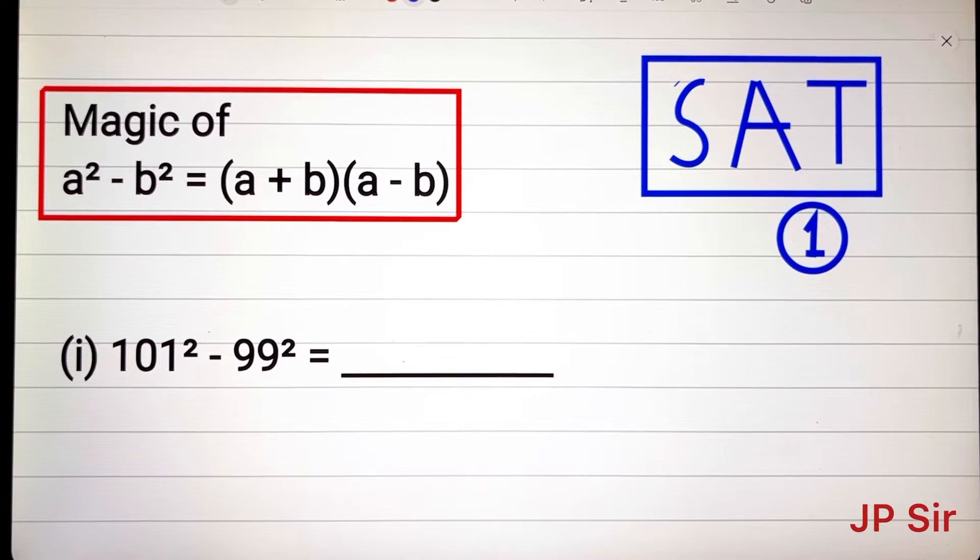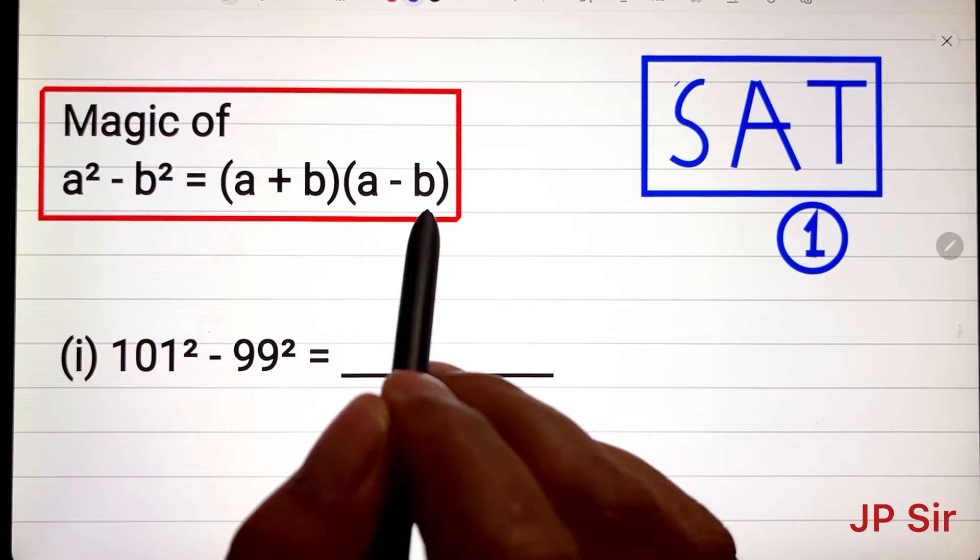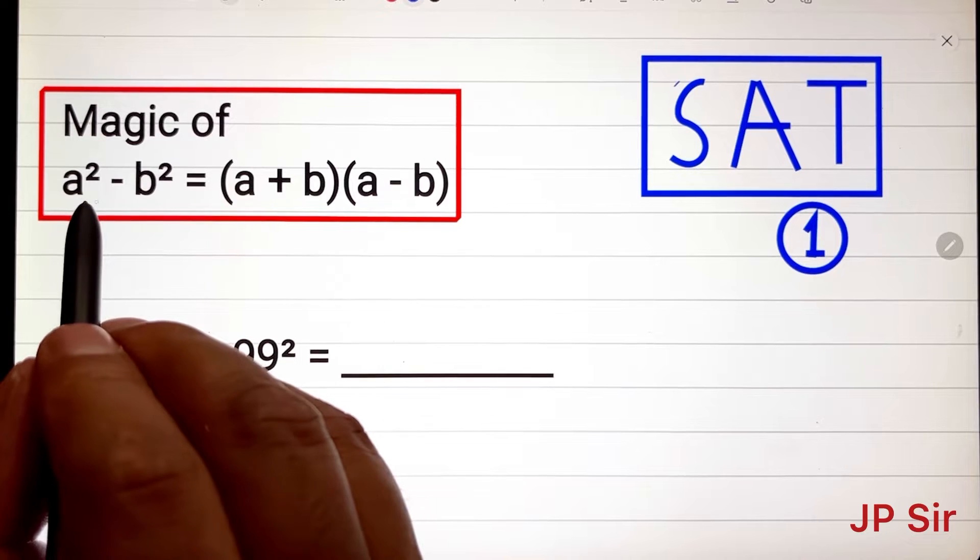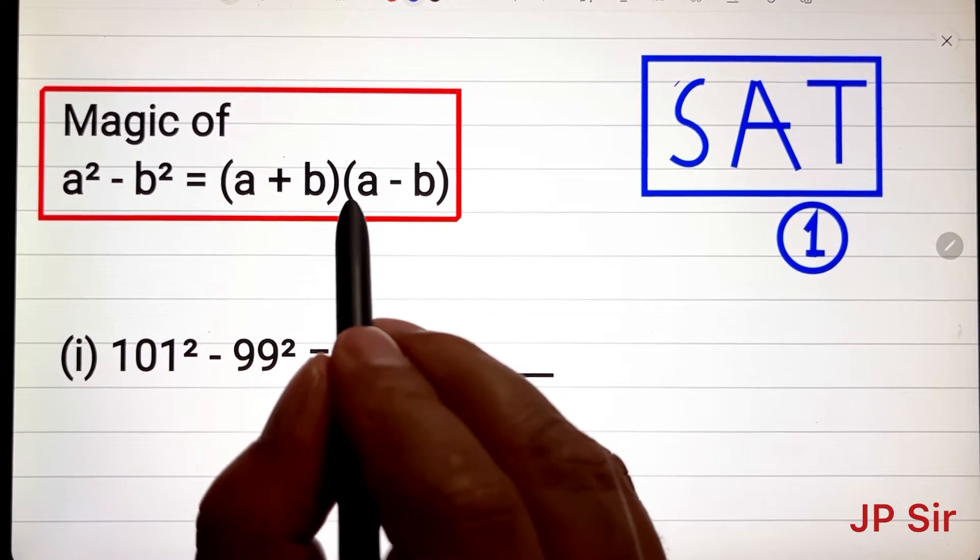Hello and welcome to video series for SAT Math. In the first video you will learn the magic of this identity. We have an identity: a² - b² = (a + b)(a - b).